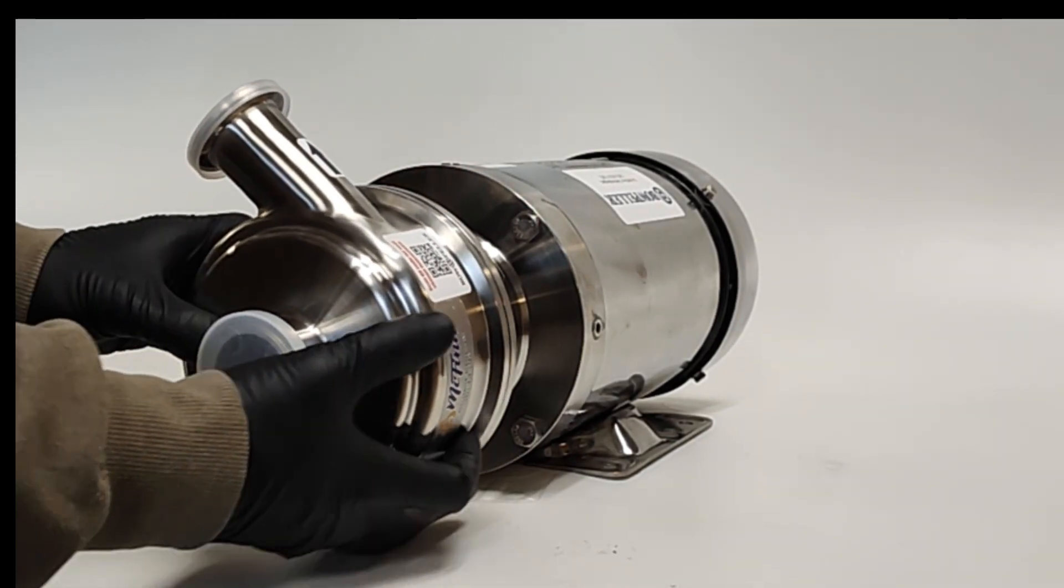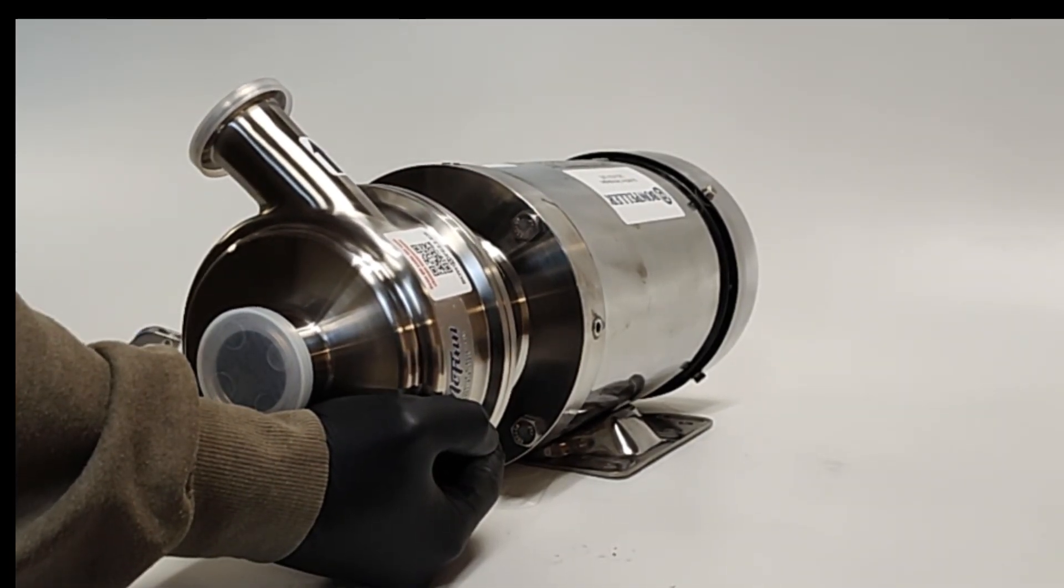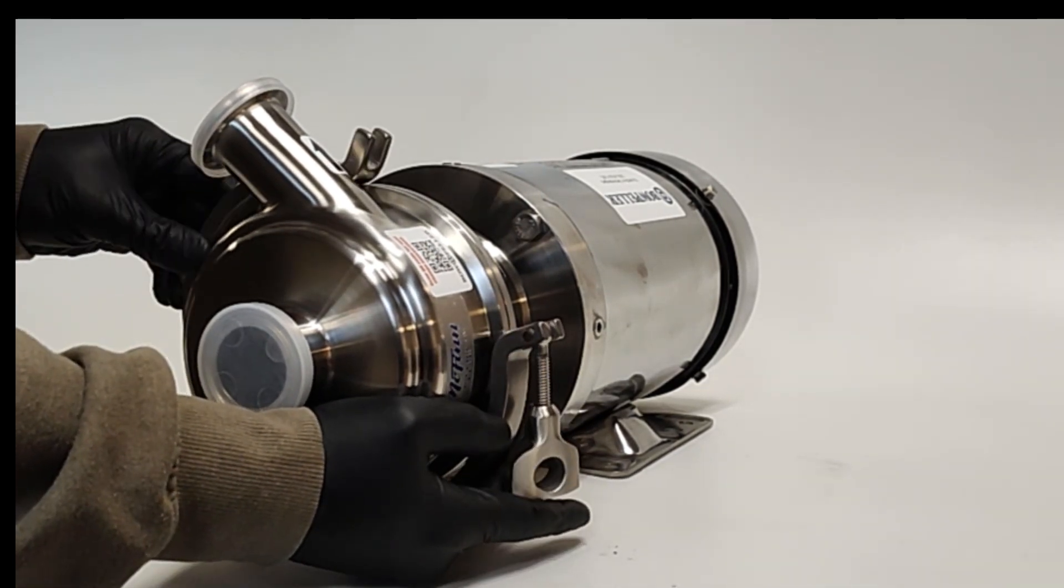Attach the pump casing and secure it with the casing clamp. The casing discharge port can be rotated to any desired position.